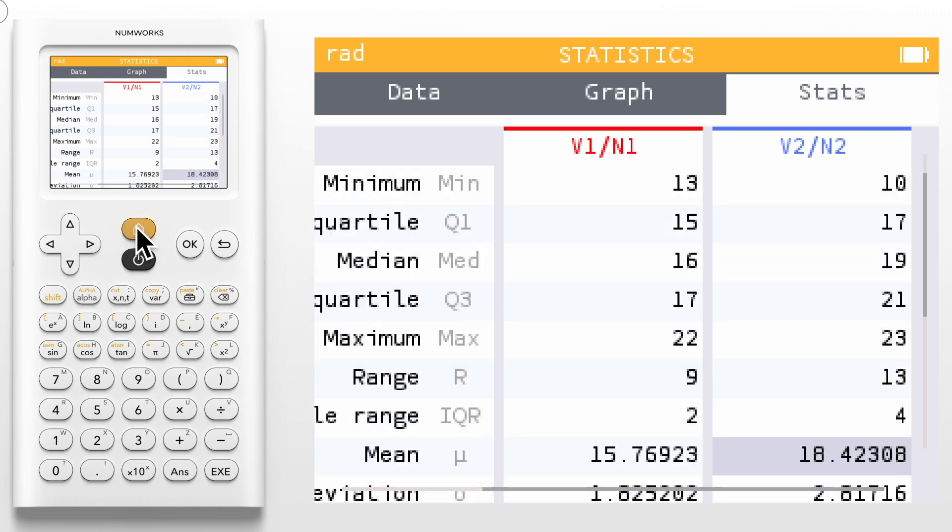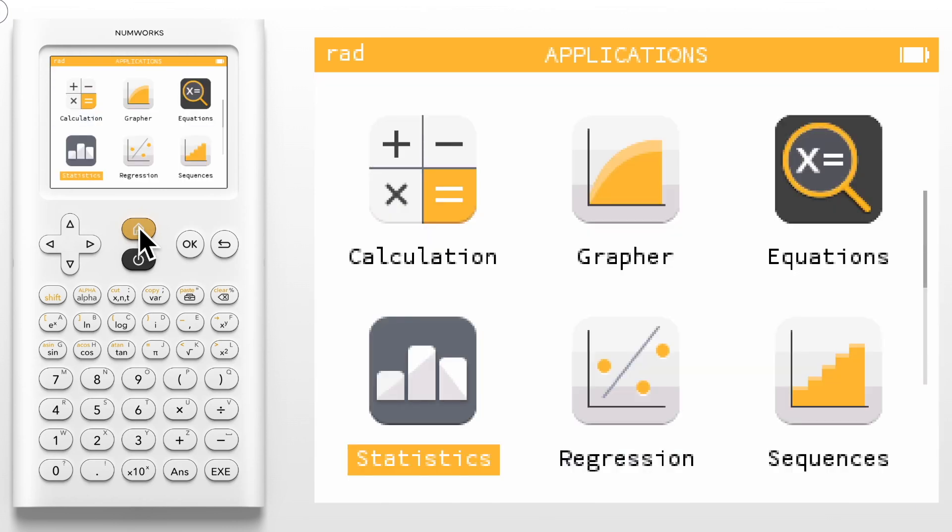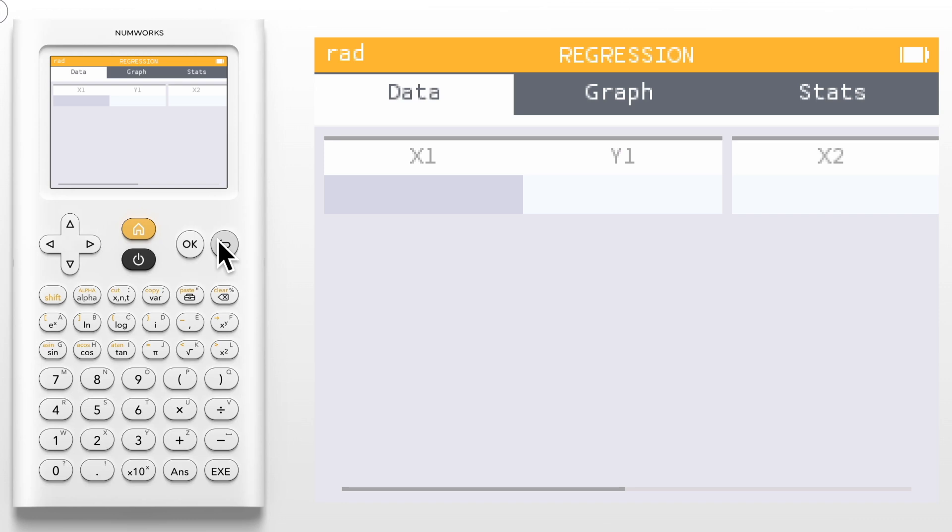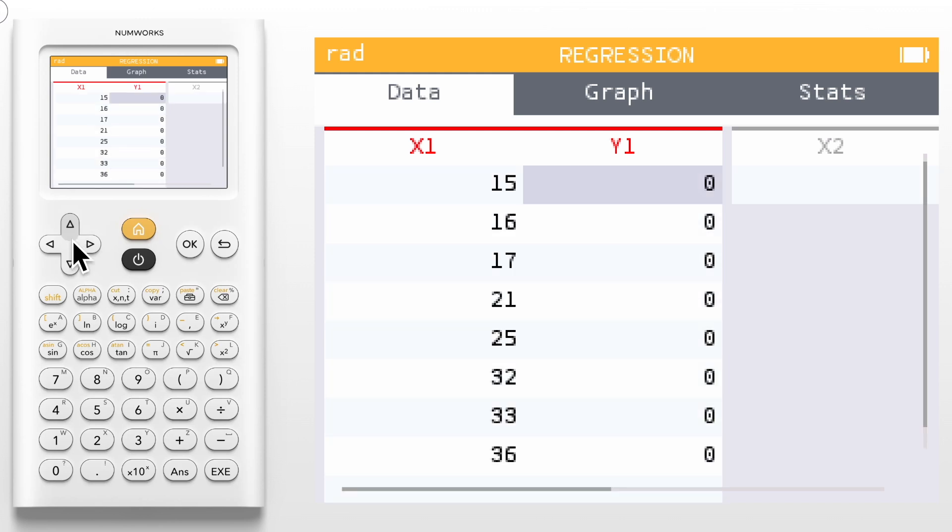Click on the home button to return to the main screen of the calculator. We'll now explore the regression application. Similar to the statistics app we have three tabs. The first tab is where we will enter our data but here we have columns for X and Y. For the first data set let's enter some values.